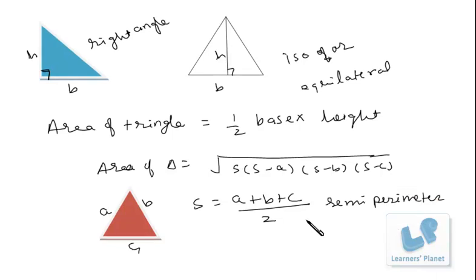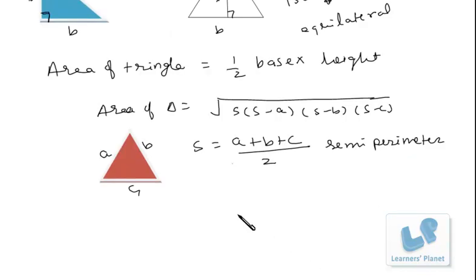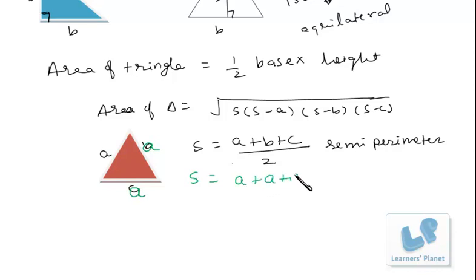Friends, now we have discussed the area of a triangle. What if all the three sides of the triangle are equal? That means if it is an equilateral triangle, a will be equal to b will be equal to c. So what will be the formula in that case for area of triangle? Let's calculate it. Suppose this is a triangle and all three sides are equal — this is a, this is also a, and this is also a. If we put the values of sides in this formula, we will get the area of this equilateral triangle. First of all, let's calculate the semi-perimeter: s = (a + a + a) / 2, or 3a/2, for an equilateral triangle.